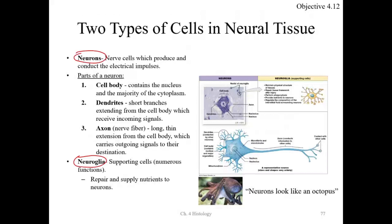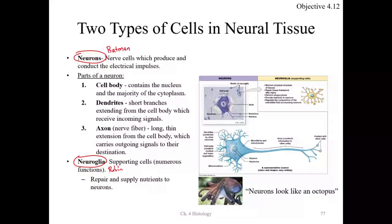I like to think of neurons and neuroglia as Batman and Robin. The neuron is Batman — it's the hero that does all the work. Neuroglia is Robin, there to support. Batman is the nerve cell that produces and conducts electrical impulses and does all signal transduction. Neuroglia support neurons by repairing, supplying nutrients, and assisting.